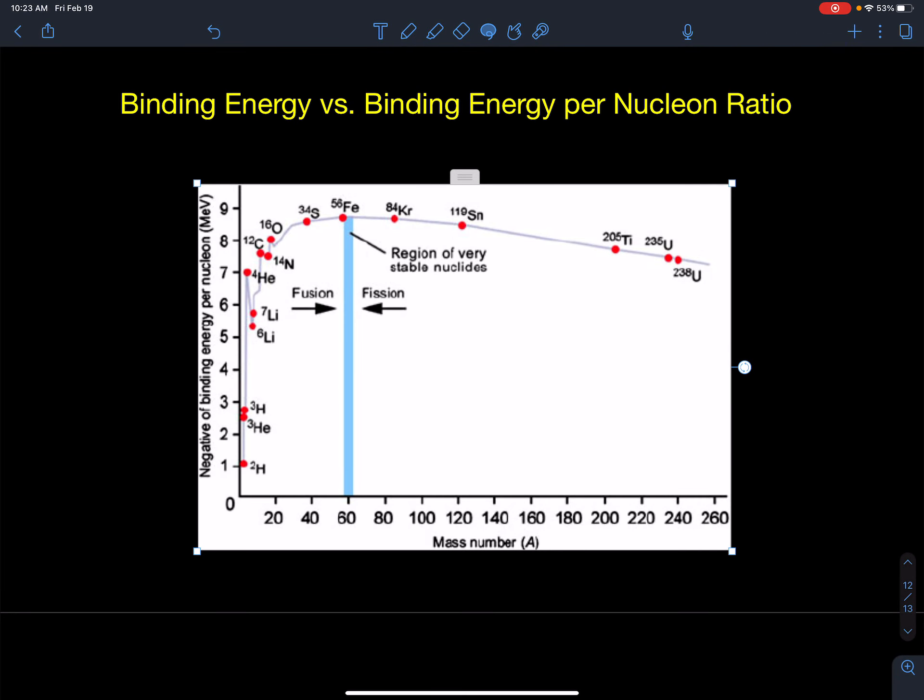All right, so after learning how to calculate the binding energy of every nucleus, we can start making some graphs. Often I would get students to do this. We don't have much time left, but I'd make you use a spreadsheet and you would then have to calculate the binding energy of about 30 or 40 different nuclei in the periodic table and graph it.